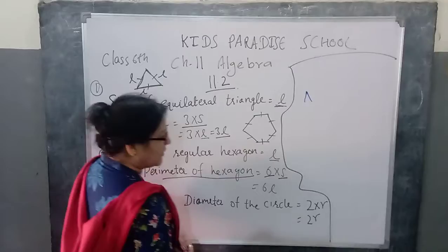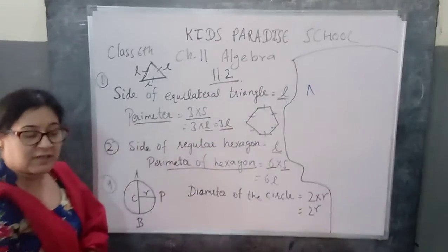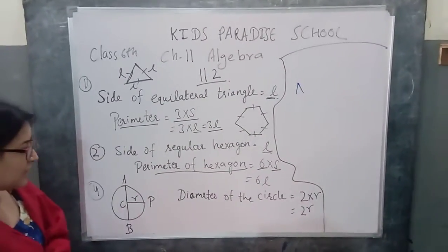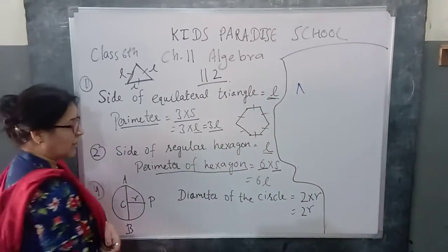Chho side agar meh equal hain, to us segment ka perimeter kya hogya? Six into side, which gives us 6L.